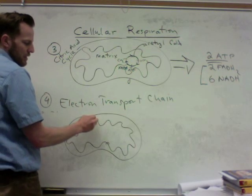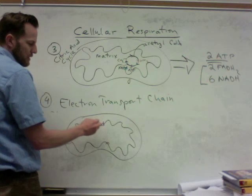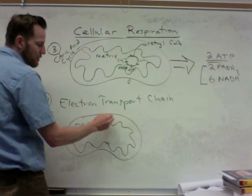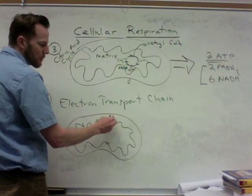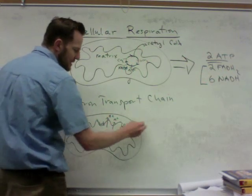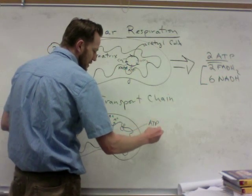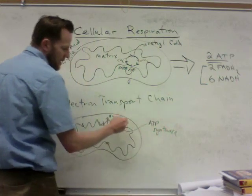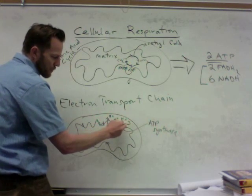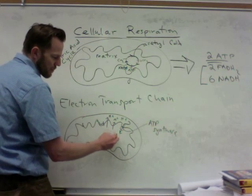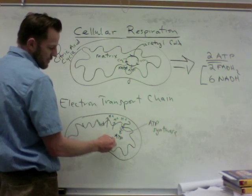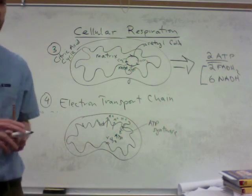The electrons are dumped down the chain — you can think of staircases made of proteins. When that happens, hydrogen ions are pumped into the inter-membrane space. Then they flow through a protein called ATP synthase by diffusion, because there are a lot of hydrogen ions there. As they flow through ATP synthase, they generate ATP and also produce some water. That's a real overview of cellular respiration.